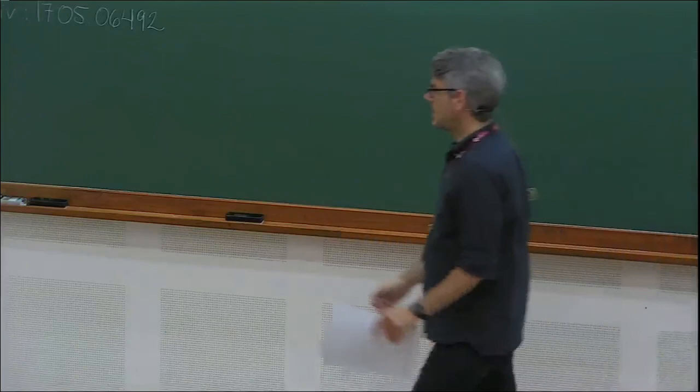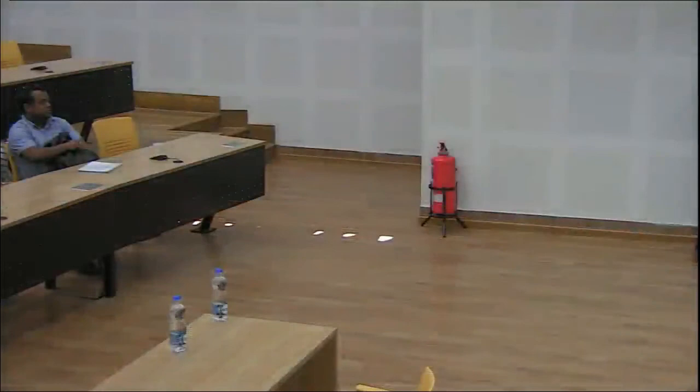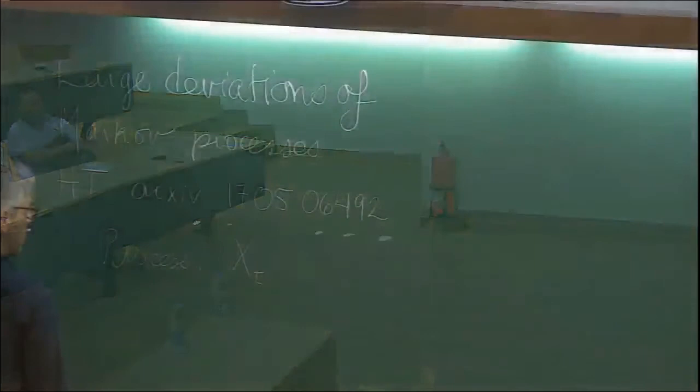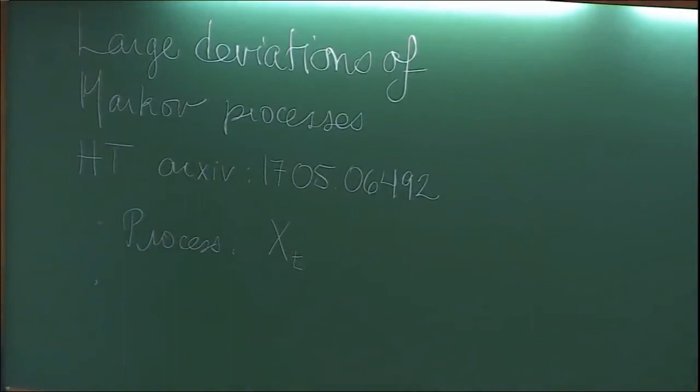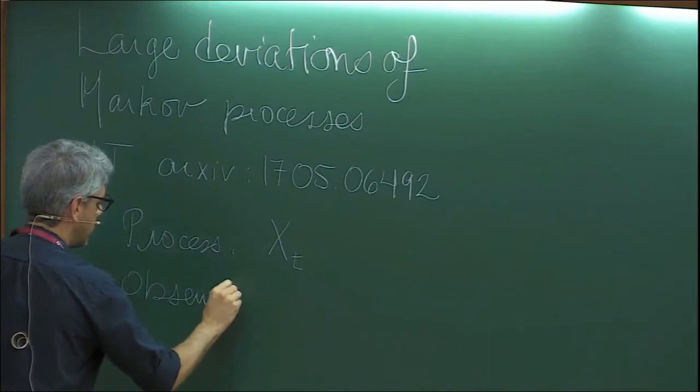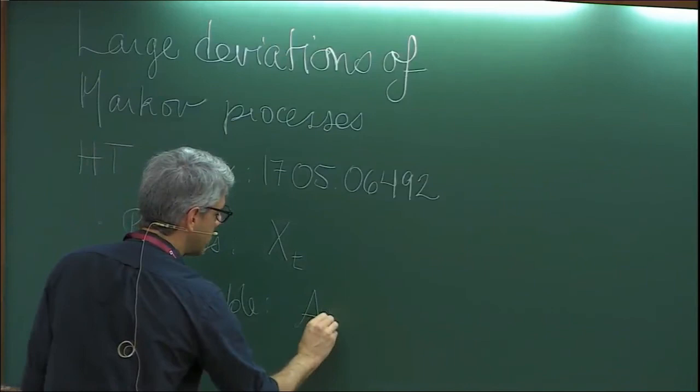The basic problem is that I have a certain process — a Markov process — and then I have some random variable defined on that process. The random variables we're interested in studying in physics are time-integrated observables. I call these observables: an observable is just a random variable defined on the process. I'm going to call this A_T, where capital T is the integration time. Typically you have something like the integral in time of some function of the state.